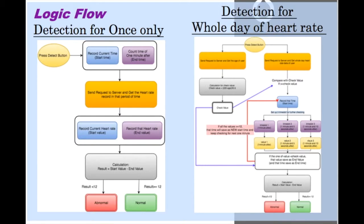For the detection for once, my application keeps sending requests to the server for getting heart rate data every 30 seconds to shorten the time of getting results. For detection for the whole day, firstly, the request of the user's age is sent to the server and the age value is used to compute the check value.